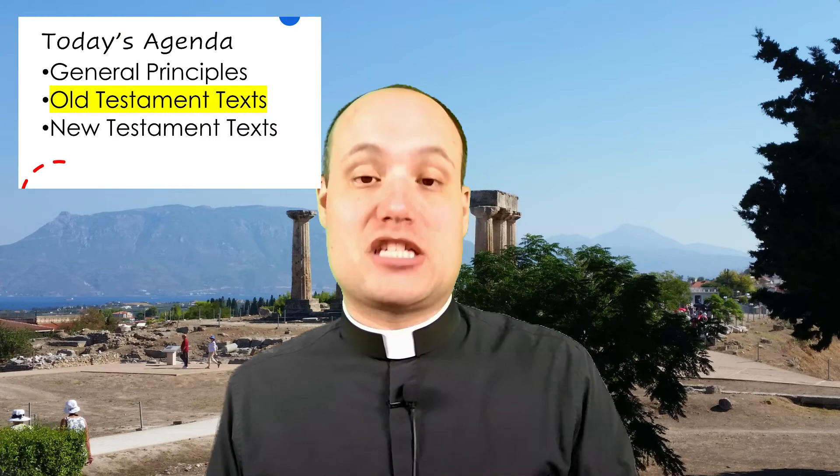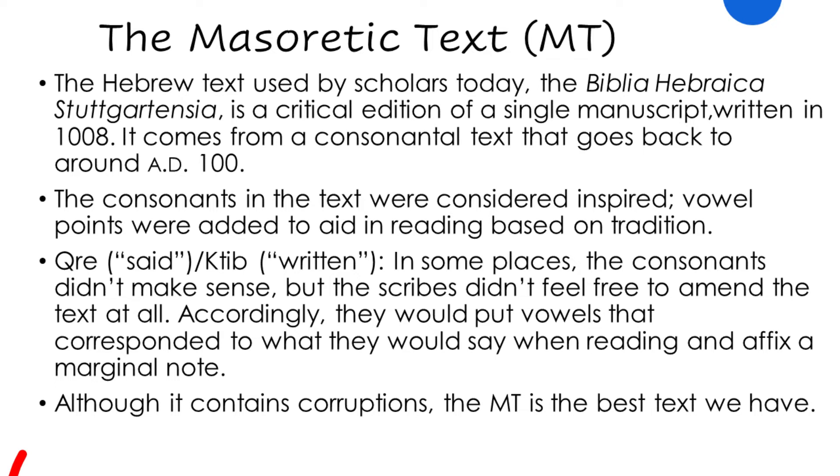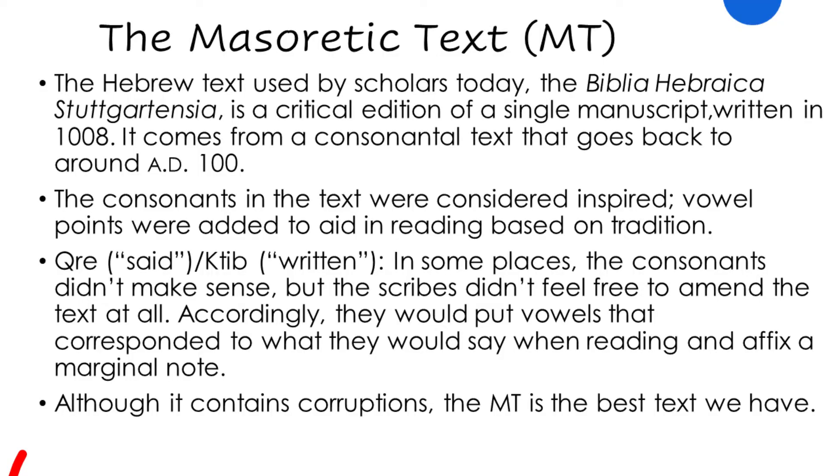Now let's say a few words about the Old Testament. Scholars begin with the Masoretic text — the MT — the Hebrew text, which is regarded as the most authoritative in Hebrew Bible studies. The manuscript we use was written in 1008 AD. It's the result of Hebrew scholars who transmitted the text first with consonants only — the Hebrew alphabet contains 22 consonants — and over time perfected a system of adding vowels using dots and symbols above and below the letters. Although it has some corruptions, it's the best text we have; the Hebrew is simply more authoritative than any translation.